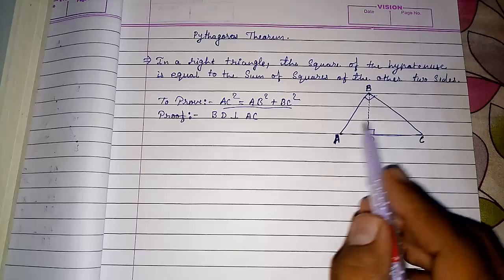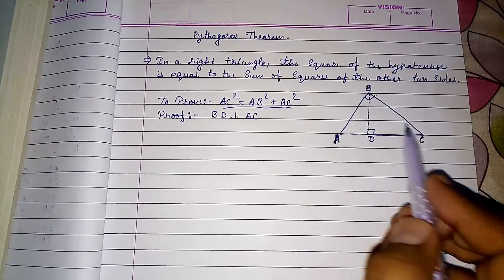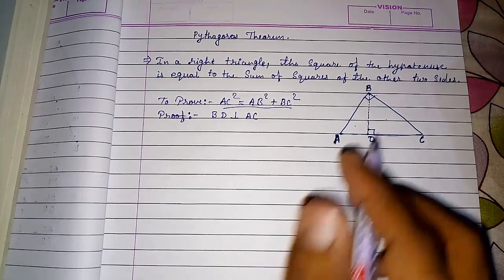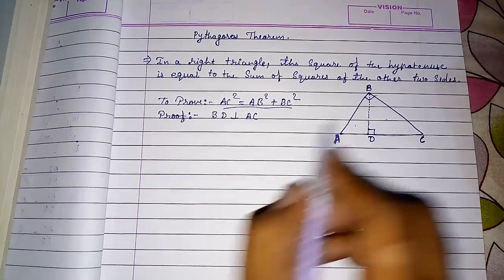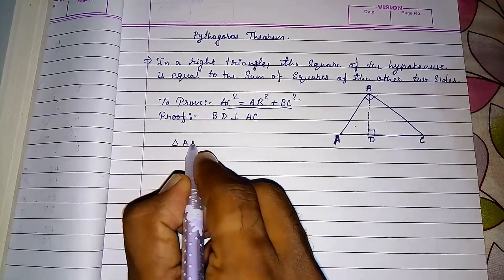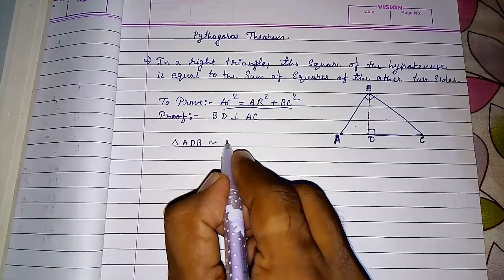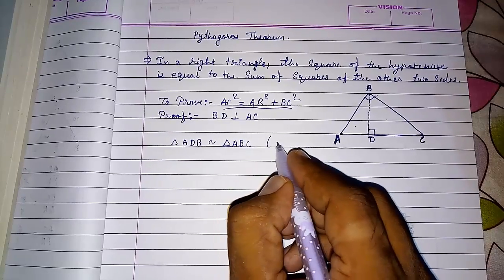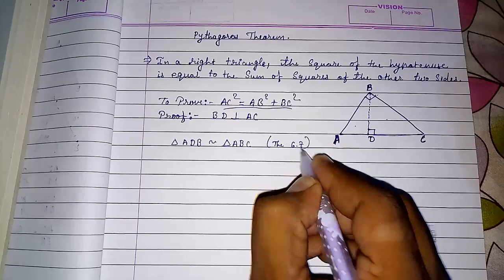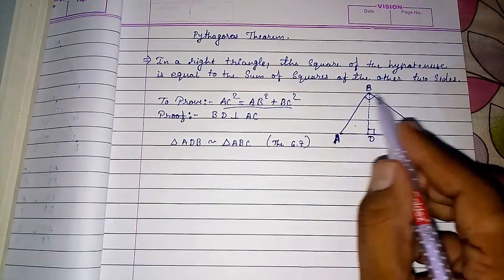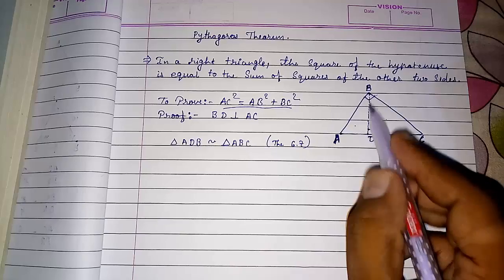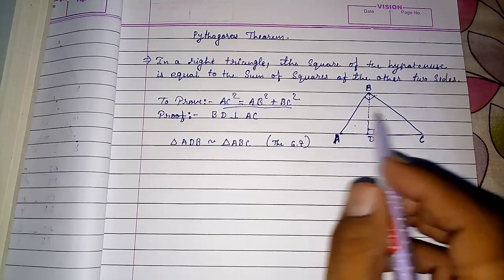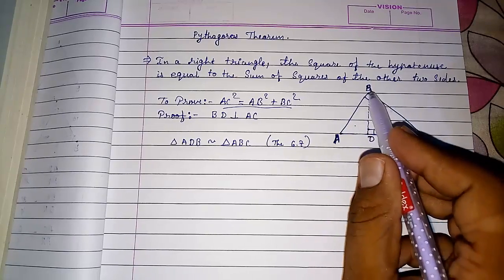Now we can make these two triangles, this smaller and bigger, and in the next one this smaller and this bigger, similar by angle-angle similarity rule. So first I am going to make triangle ADB similar to triangle ABC by theorem 6.7 or by angle-angle similarity. Look here, in ABC, A is common, and in ADB, A is common, and this 90 degrees B is also 90 degrees. So by angle-angle similarity you can say ADB is similar to ABC.